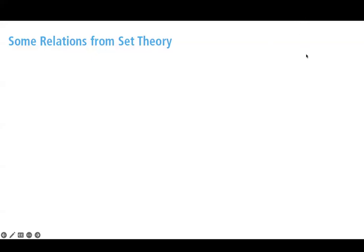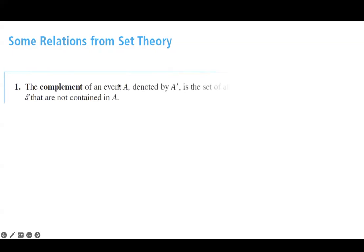Let's go back to set theory and explore some relationships for sets and events for probability. The complement of an event like A, which is denoted by A' or A^c, is the set of all outcomes in S — the universal set S — that are not contained in event A.